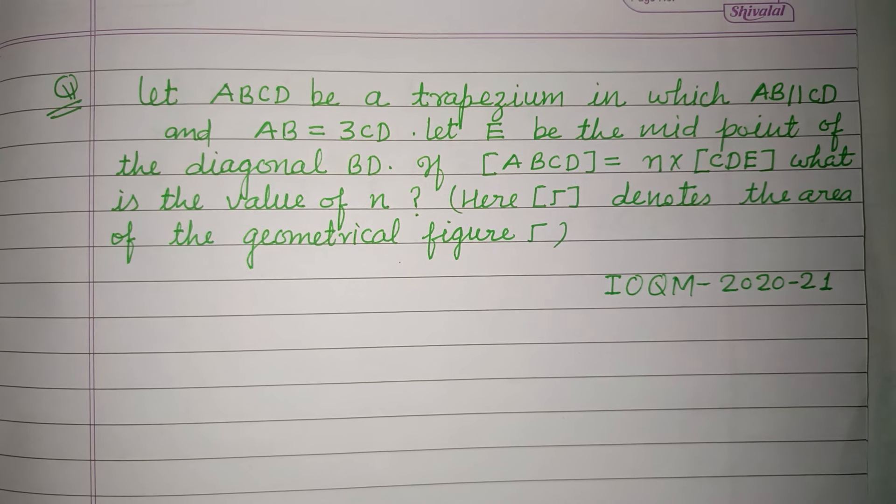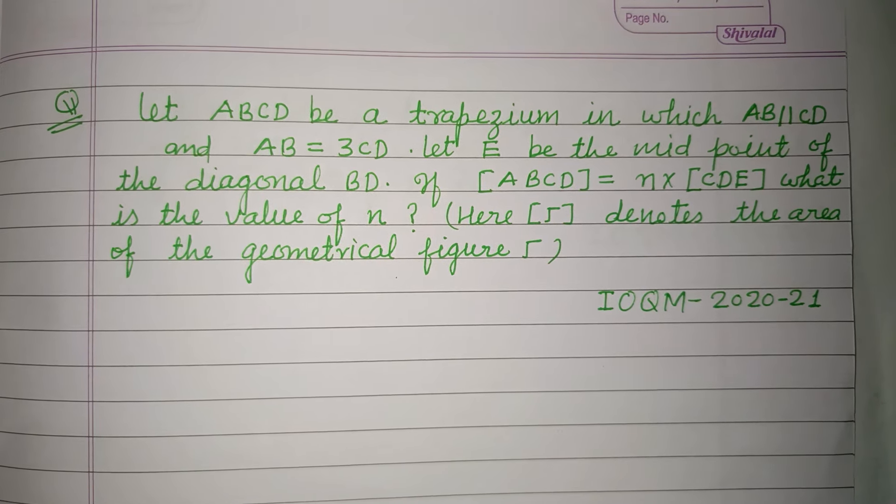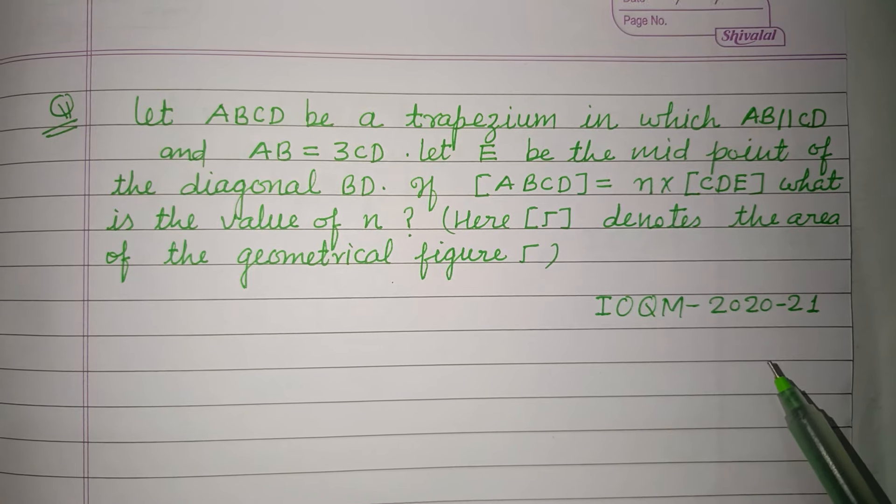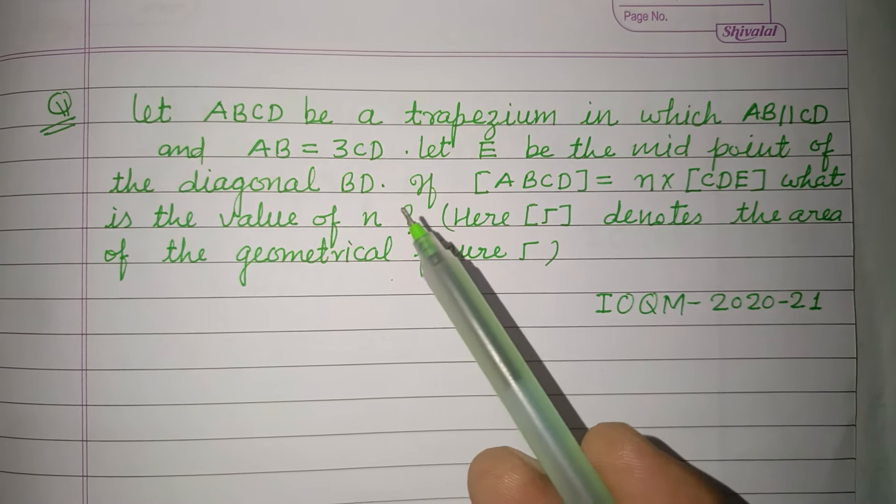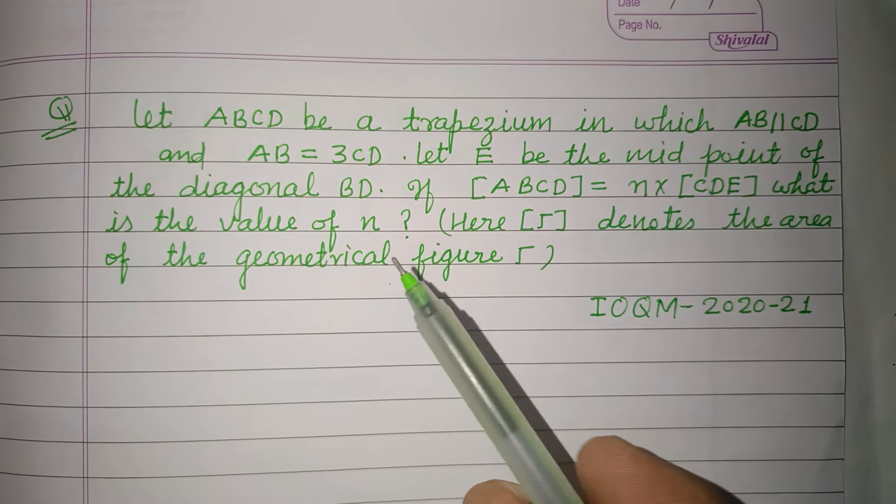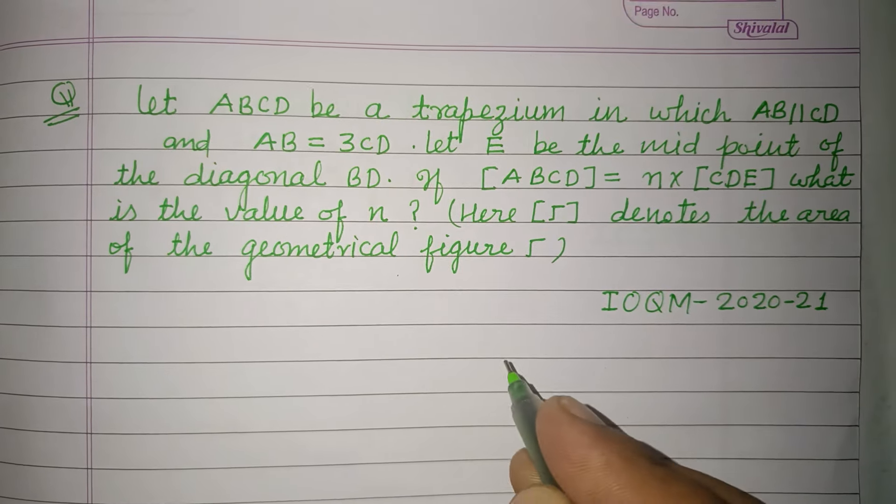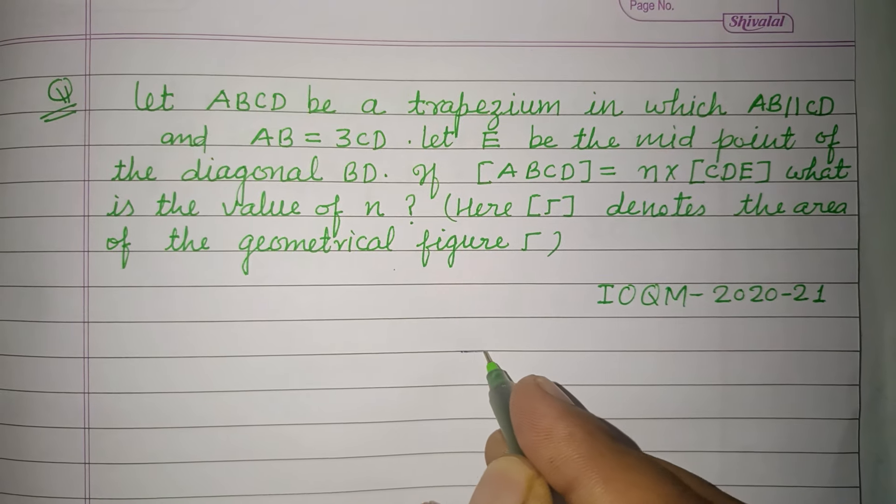Hello viewers, warm welcome to this YouTube channel. This is a question from IOQM 2020-21. Let ABCD be a trapezium in which AB is parallel to CD. So you first draw a trapezium.